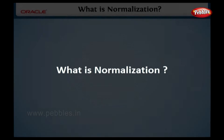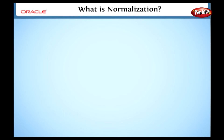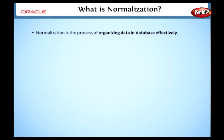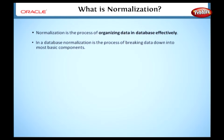What is normalization? In a previous lesson, we discussed databases and their different types. In this section, we are going to discuss normalization. Normalization is the process of organizing data in a database effectively. In a database, normalization is the process of breaking data down into its most basic components.